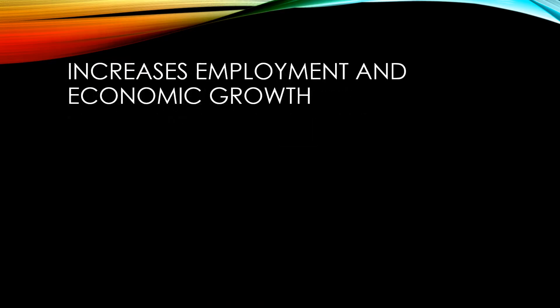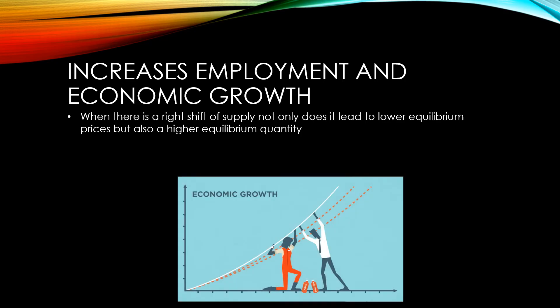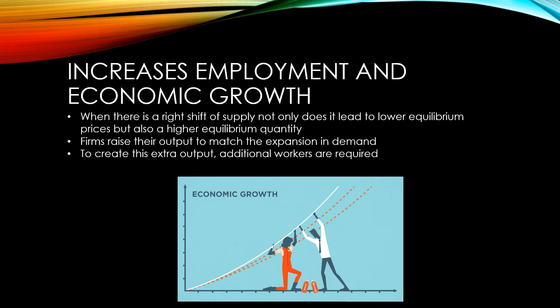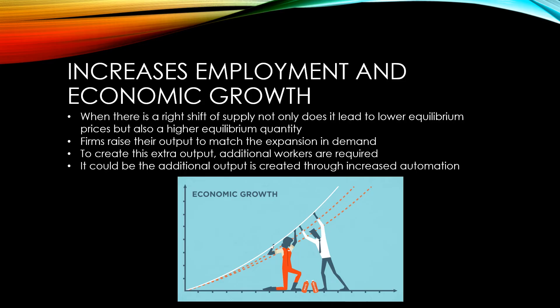When there is a right shift in supply, not only do we see lower equilibrium prices, but also a higher equilibrium quantity. Firms raise their output to match the expansion in demand. To create this extra output, they generally require additional workers. It may be in some cases that the additional output and economic growth is created through increased automation, which will limit the improvements to employment.